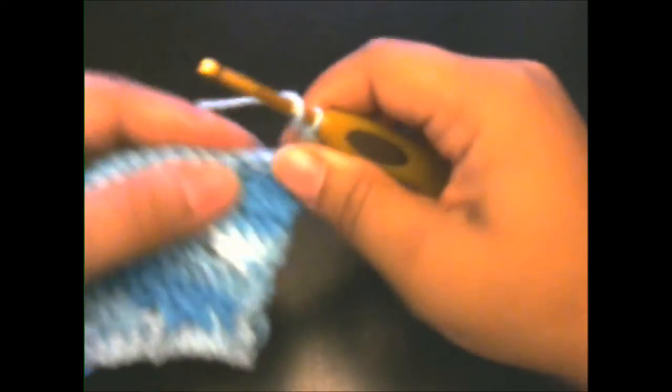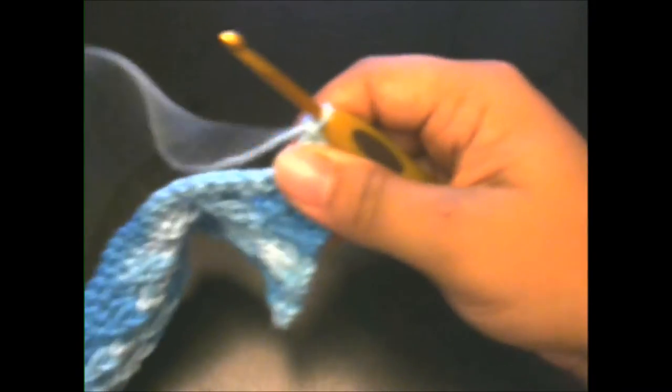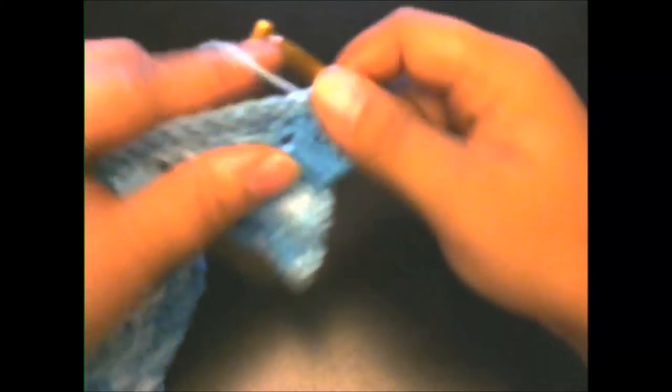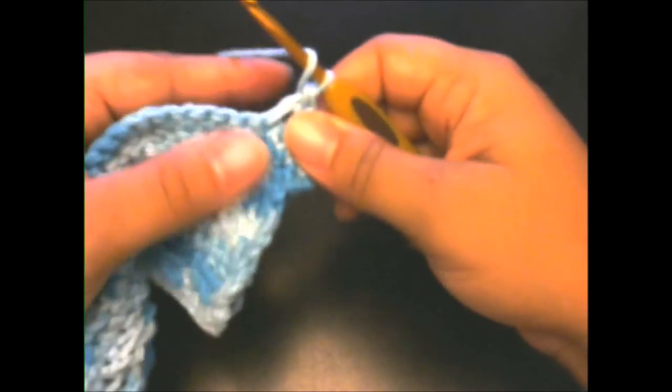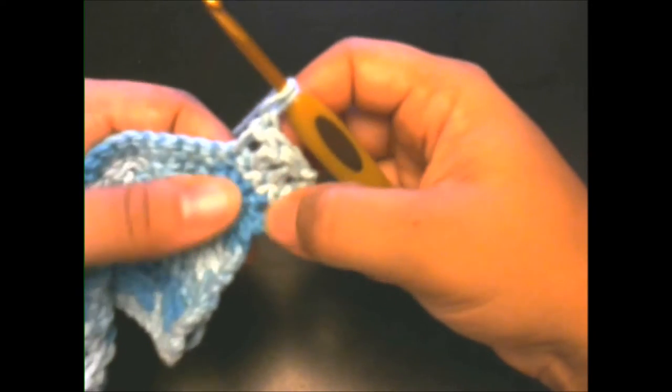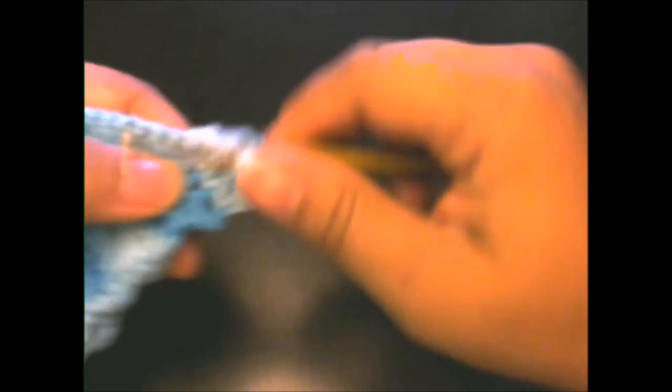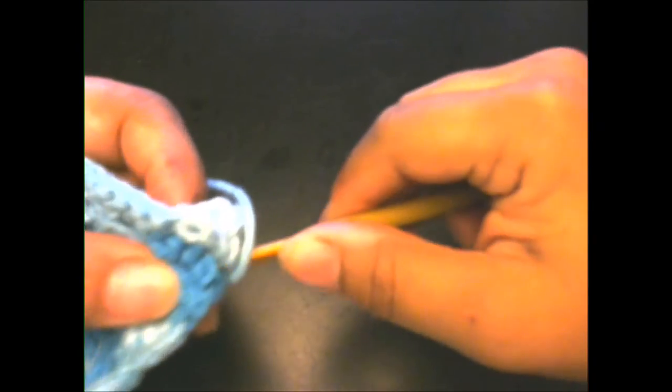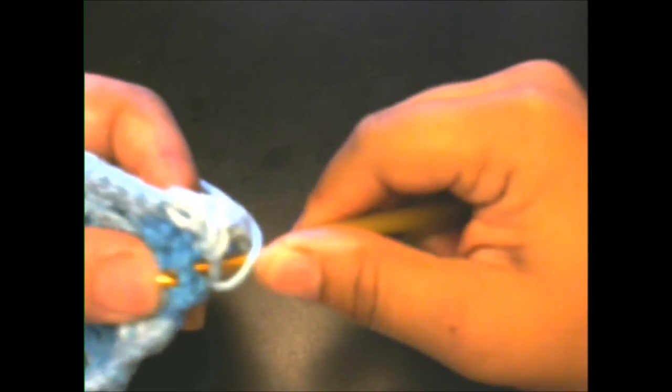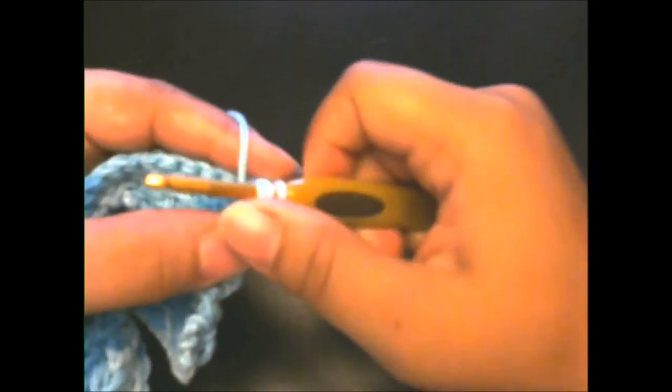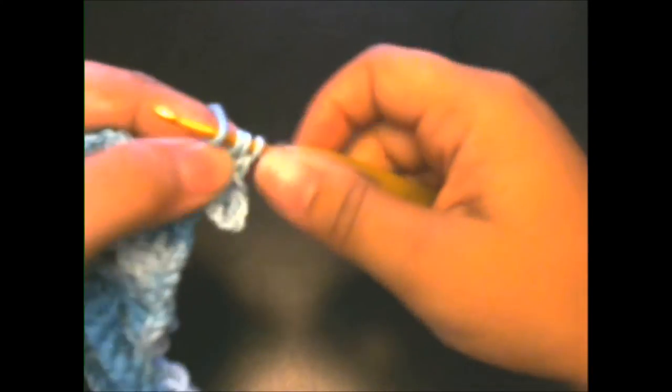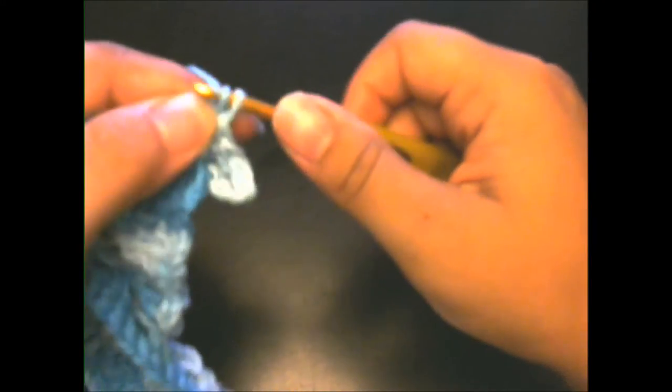So one, this is two, and this will be our last one which will be three. Then you want to pull up your yarn just a little bit and yarn over like you're doing a double crochet. What you want to do is go back to that stitch that you skipped down here, stick your crochet hook in there, make sure you get both loops, and make a normal double crochet. Pull up, there you go.